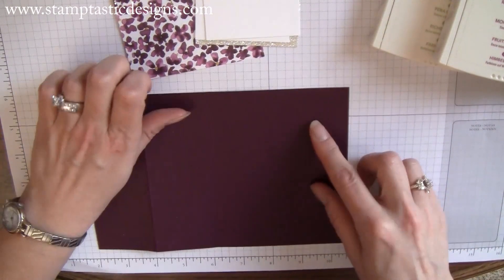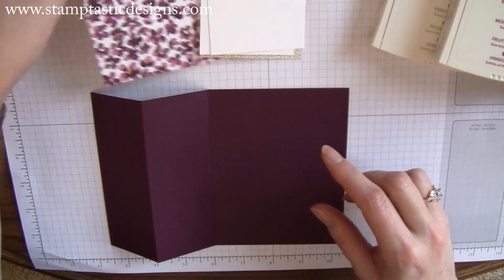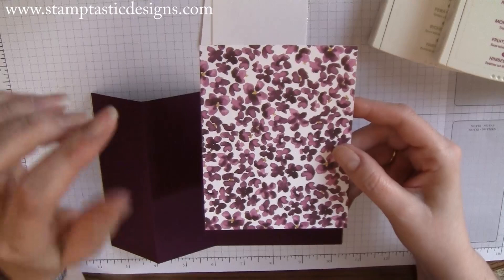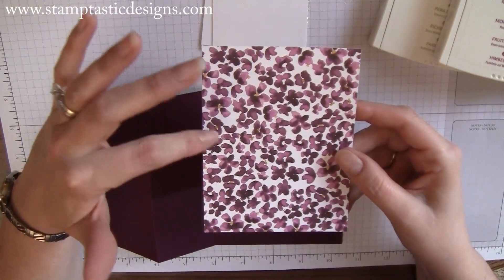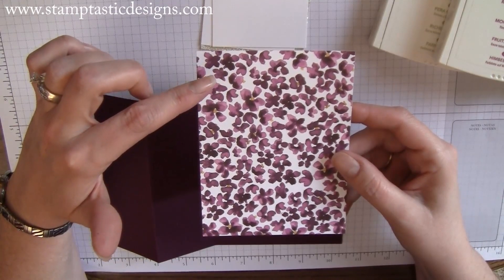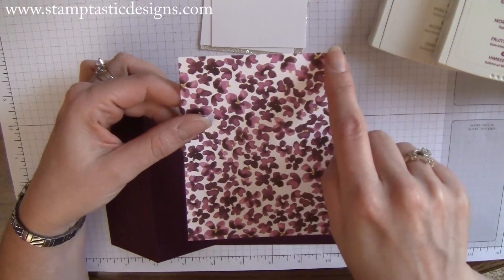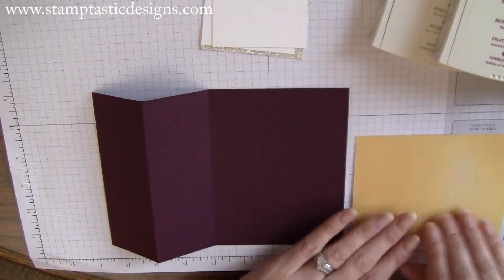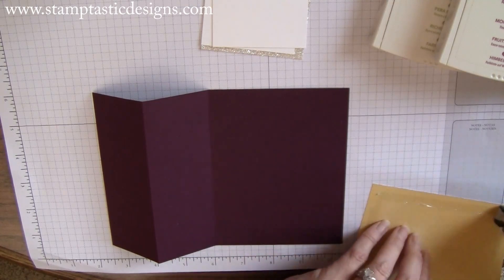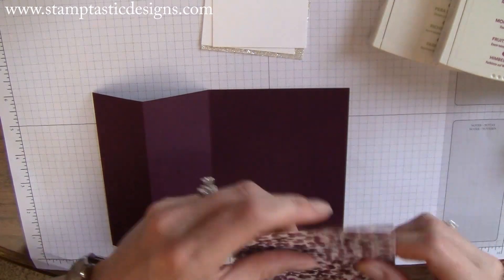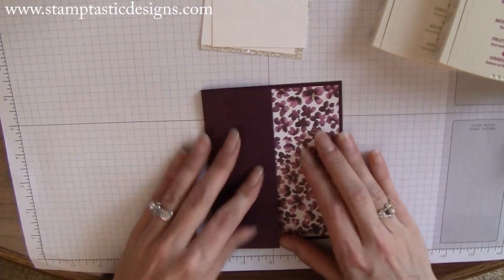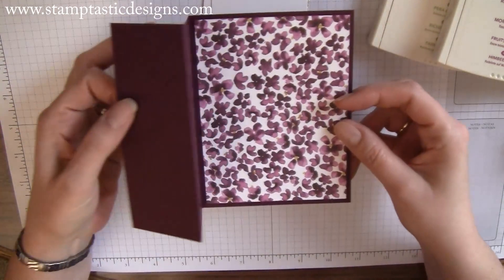To make the card, I cut a piece of designer series paper from the Painted Petals collection, called Painted Blooms. I cut it at five and a quarter by four, and I'm just going to tape this right on the inside. Now you can see how my card is coming together.